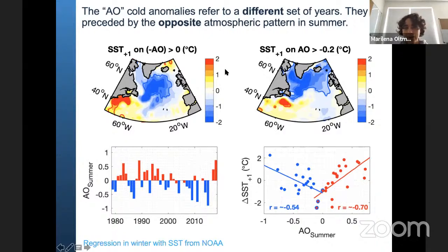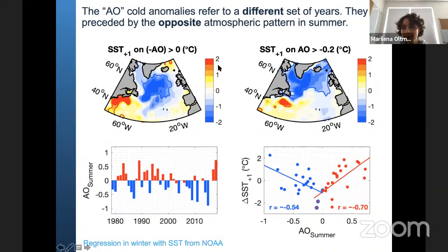We get cold anomalies similar to what we've already seen. But we also get cold anomalies when we regress on positive AO values — completely different events, initiated by the opposite atmospheric circulation pattern in summer, yet we still get cold anomalies. These are a different set of years preceded by the opposite atmospheric pattern in summer.